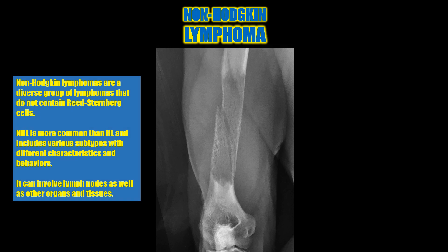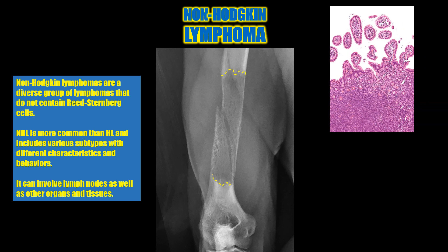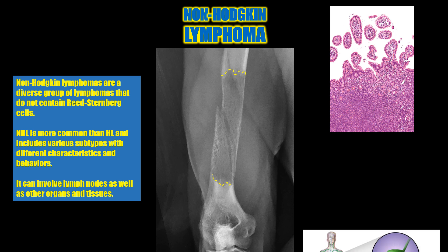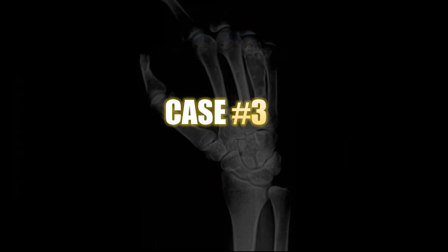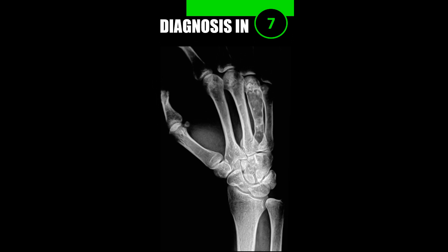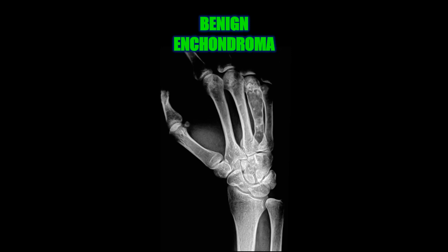Case number two is non-Hodgkin's lymphoma. There is a pathologic fracture extending through a lytic lesion in the distal humerus. Non-Hodgkin's lymphoma is a diverse group of lymphomas that do not contain the Reed-Sternberg cells, and it can involve lymph nodes as well as other organs and tissues throughout the body.